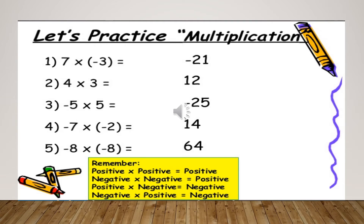Minus 7 multiplied by minus 7 — both numbers are negative, and minus times minus equals plus, so 7 times 7 is 49, giving a positive answer. In the fifth example, minus 8 multiplied by minus 8: minus times minus equals plus, and 8 times 8 is 64. Again, both numbers have the same sign, so the product is positive.